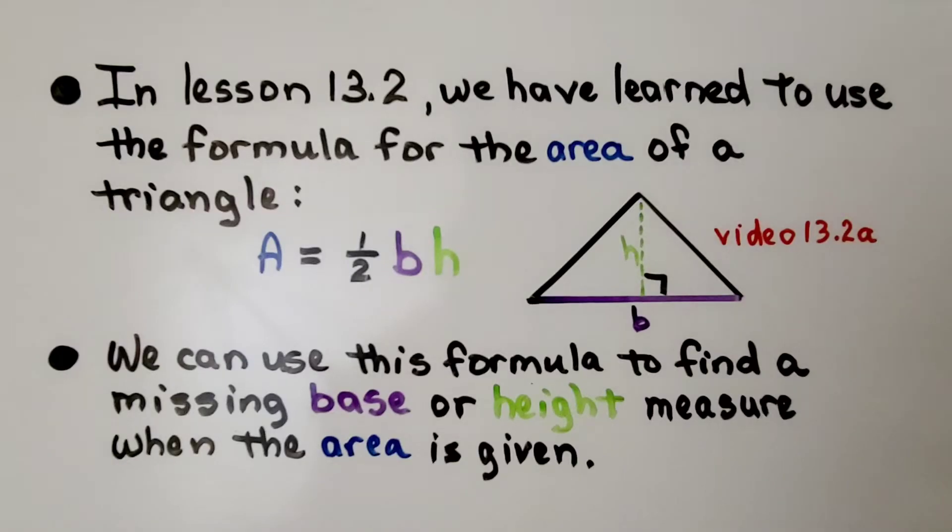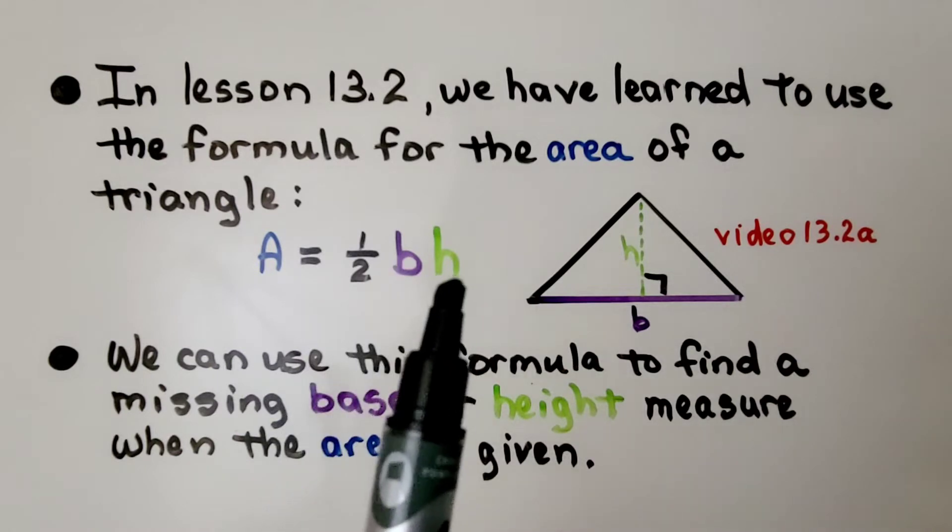In lesson 13.2, we have learned to use the formula for the area of a triangle. The area is equal to half the base times the height.